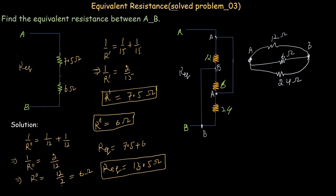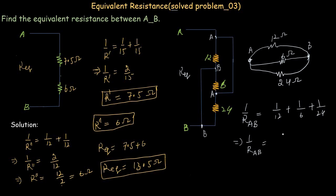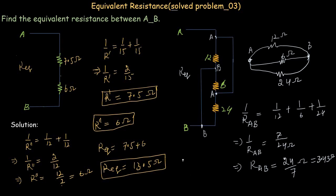This is the simplified version of the problem. All three resistors are sharing the same two points, so they are in parallel. The equivalent resistance: 1 divided by RAB equals 1 divided by 12 plus 1 divided by 6 plus 1 divided by 24. Using a calculator, this gives 7 divided by 24 per ohm, so RAB equals 24 divided by 7 ohms, which equals 3.43 ohms.